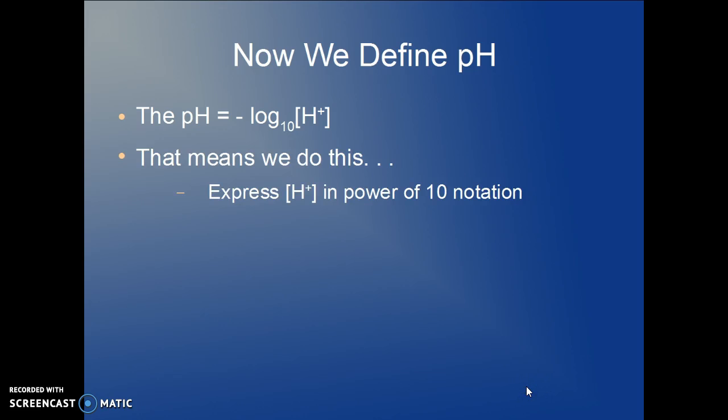What that means is we express the hydrogen ion concentration in a power of 10 notation. It's called an order of magnitude. It is usually less than 1.0. So it's like some number times 10 to the negative whatever is the hydrogen ion concentration.